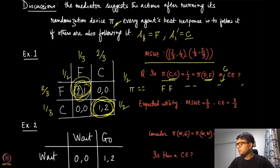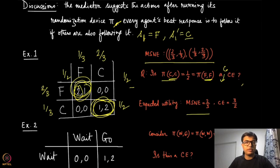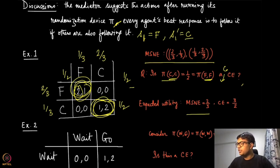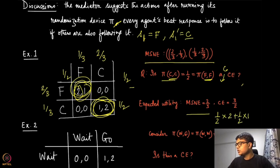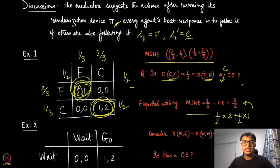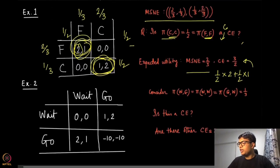Comparing expected utilities: under the mixed strategy Nash equilibrium, both players get 2/3. Under this correlated equilibrium, player one gets 1/2 × 2 + 1/2 × 1 = 3/2, which is larger. So following a correlated strategy leads to better expected utility than the mixed strategy Nash equilibrium.